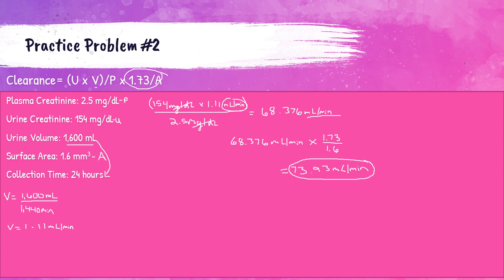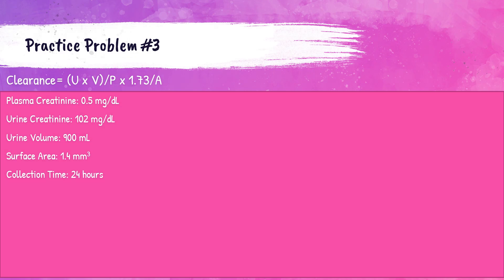All right, let's go on to the last one. If you want to pause this video and see if you can do the calculation by yourself, that would be great practice. Again, we have our creatinine clearance calculation: U times V divided by P times 1.73 divided by A. This patient's plasma creatinine value is 0.5 mg/dL, urine creatinine value is 102 mg/dL, total urine volume over the 24-hour period is 900 milliliters, and body surface area is 1.4. Our U value — the concentration of urine creatinine — is 102 mg/dL.